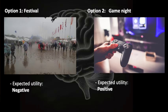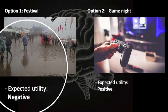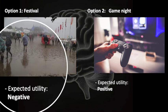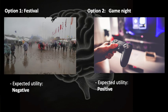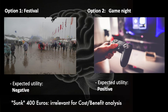If you chose to go to the festival, you are actually being irrational. Why? Because based on the evaluation of available information, you're not optimizing your situation. You know you're not going to have a good time at the festival, and you know you're going to have a great time at your friend's place playing video games. These 400 euros have been lost anyway — you can't do anything about it.